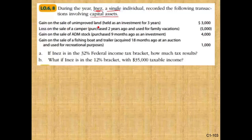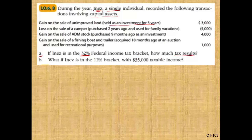Gain on sale of unimproved land held for three years as an investment. So the $3,000 — what do we call that? It's a long-term capital gain. Why? Because she held this asset for three years.